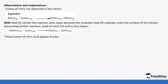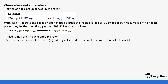The fumes of nitric acid usually appear brown. The reason they appear brown is because of the presence of nitrogen dioxide (NO₂) that is formed by the decomposition of nitric acid. When nitric acid decomposes, it forms nitrogen dioxide, oxygen, and water. This nitrogen dioxide is the one that causes the brown color.